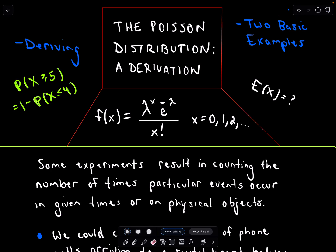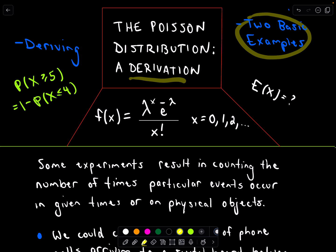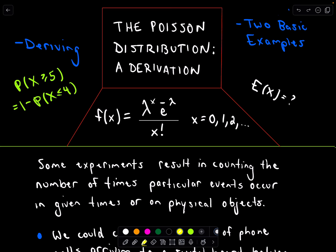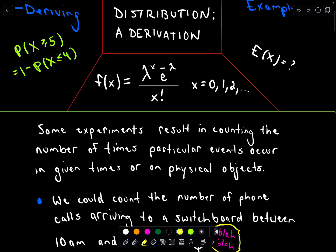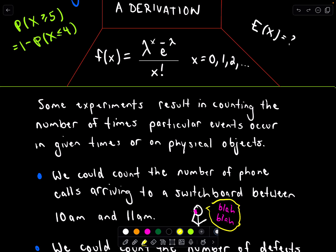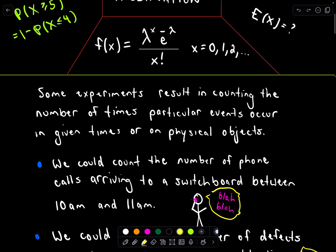In this video, we're going to talk about the Poisson distribution. We'll start by discussing what it is, then do a derivation, and then do two basic examples at the end. Understanding the derivation is great because it really bounces off of Bernoulli trials, and understanding that is useful because there'll be some overlap between these two distributions in statistics and probability.